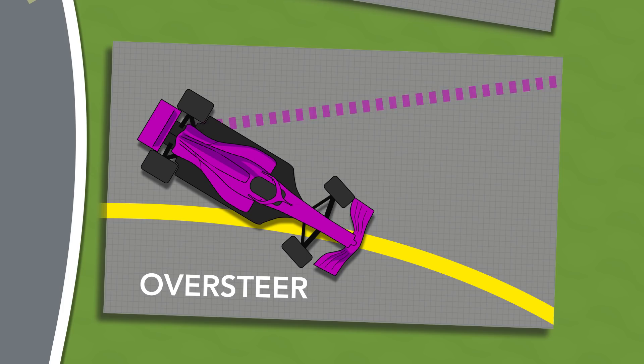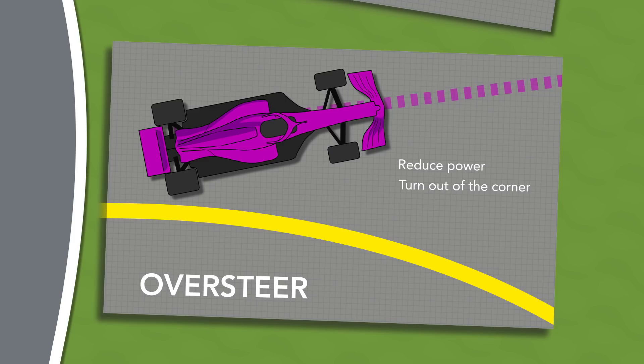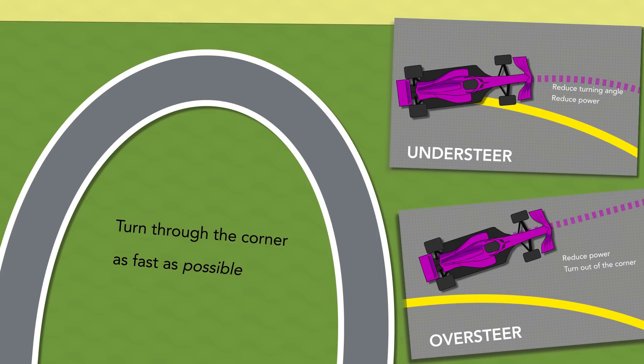Oversteer can result in the car completely spinning out of control. To counter the back end sliding out, the driver will want to drop the power and steer out of the corner. This should help bring the front end back in line with the trajectory of the car and straighten it up. As with understeer, the result can be a reduction in speed and a wider path through the corner than intended. If you saved it, at least you didn't crash.